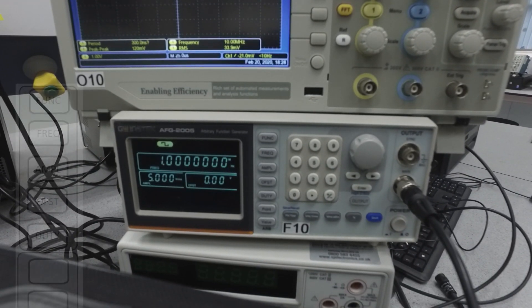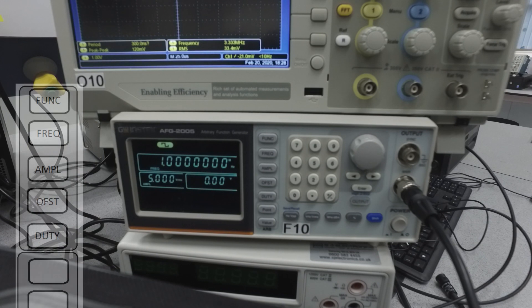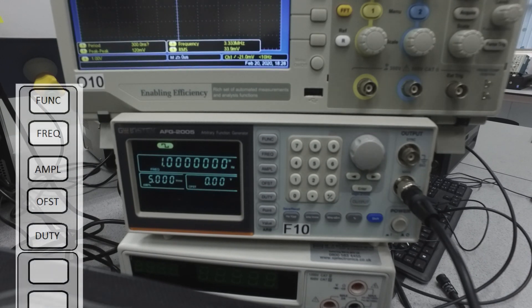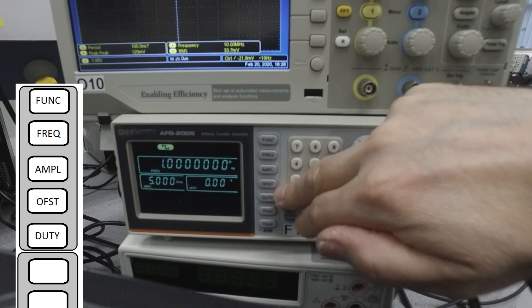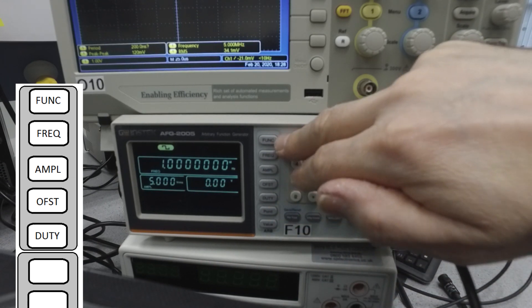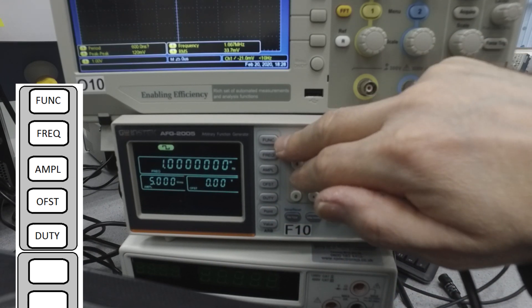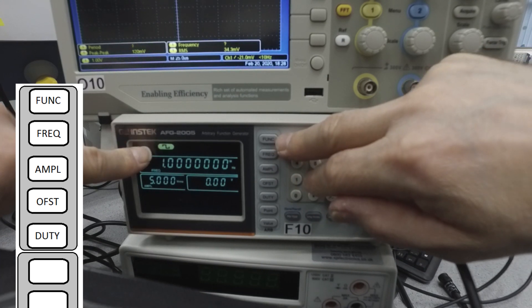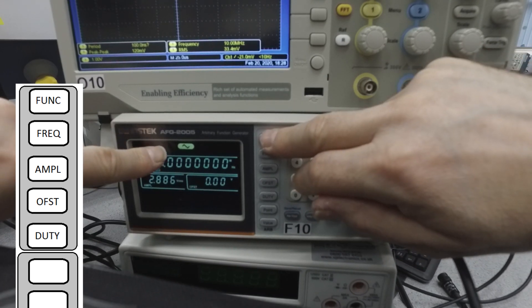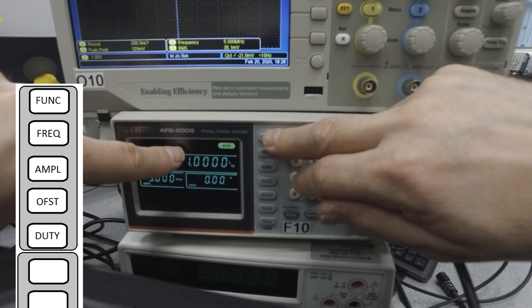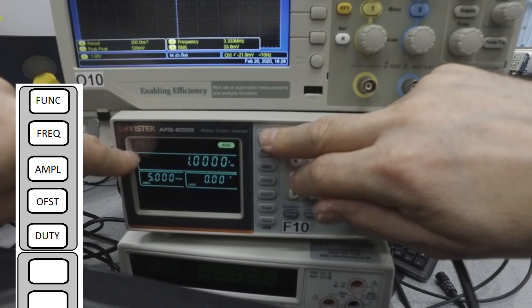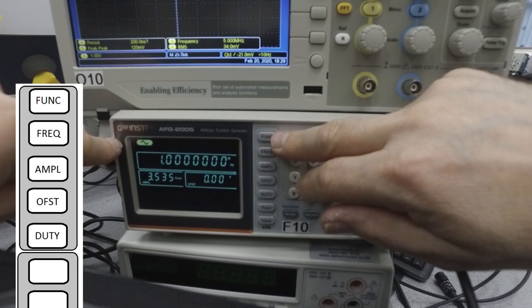So let's focus on the signal generator first. There's a whole load of functions you can change on this. If you look at the vertical line of grey buttons, the top one just called function, that'll give you, if you look over here, square wave, push it once, sawtooth wave, push it again, noise, again ARB, and right on the left hand side, sine wave.